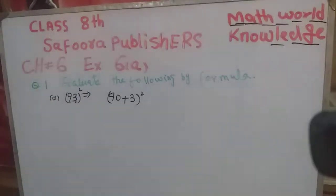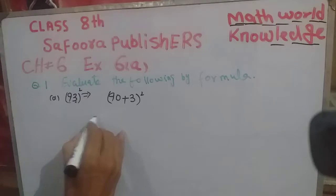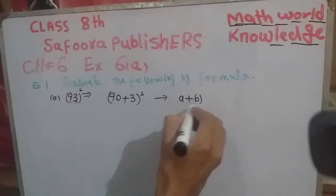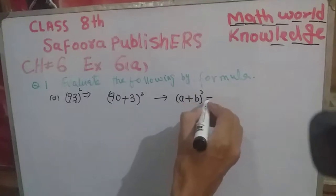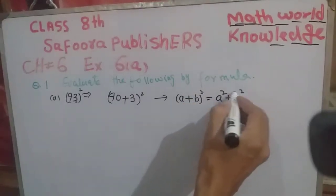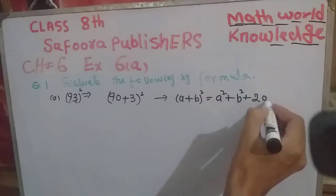So this becomes the formula, like a plus b square equals a square plus b square plus 2ab.